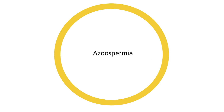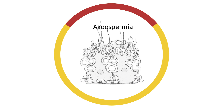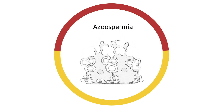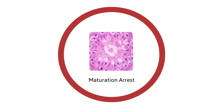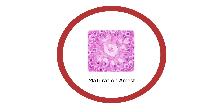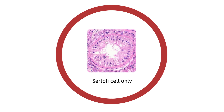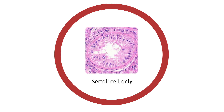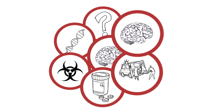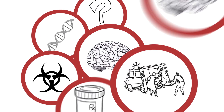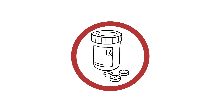At the end, spermatids differentiate into sperm cells. In azoospermia cases there is a block in sperm production. The block could be at the spermatid stage, the secondary spermatocyte stage, or the primary spermatocyte stage. When a histology section shows blockage at one of these stages, this is called maturation arrest. When it shows blockage at all stages, this is called Sertoli cell only syndrome.